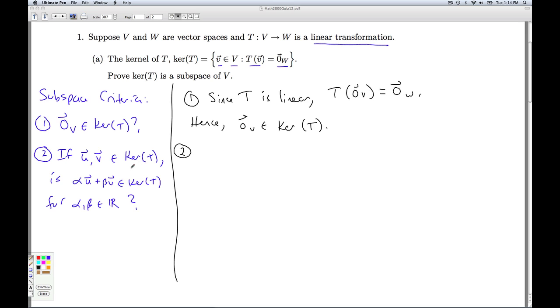Number two, let's suppose we have two fixed but generic elements in the kernel of T and two fixed but generic real numbers, alpha and beta. So let U and V belong to the kernel of T, and alpha and beta belong to the real numbers.